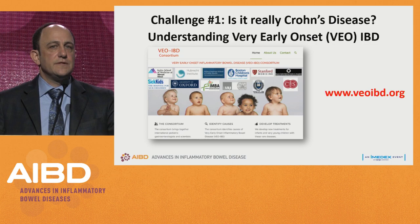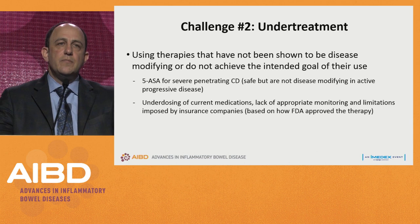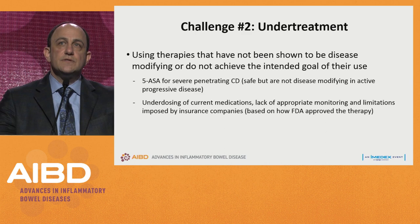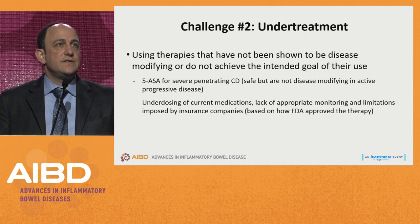Challenge number two is undertreatment, and this can have a couple of different flavors. One is using therapies that have not been shown to be disease-modifying or don't achieve the intended goal. One example is 5-ASA for penetrating or fibrostenotic Crohn's disease — they're safe, but we know they're not disease-modifying in that specific population. The really nice studies to look at 5-ASA for mild luminal Crohn's disease haven't been done yet.